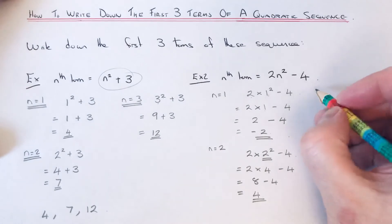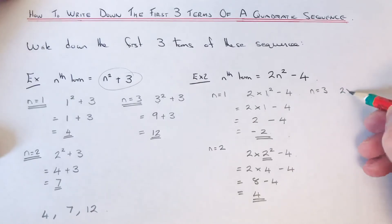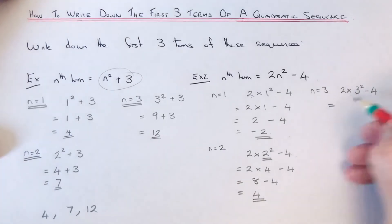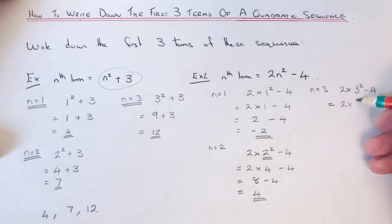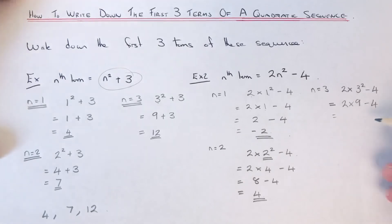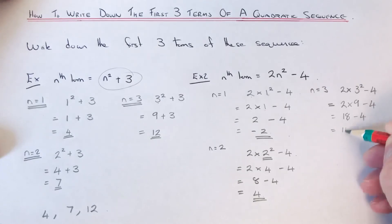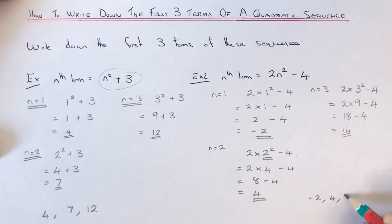To get our third term we need to sub in n equals 3. So it will be 2 times 3 squared take away 4. We work out the squaring bit first — 3 squared is 3 times 3 which is 9. So we end up with 2 times 9 take away 4. 2 times 9 is 18, minus the 4, so 18 take away 4 is 14. That is our third term. So our first three terms are minus 2, 4, and 14.